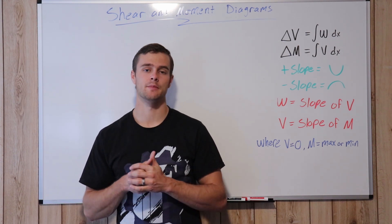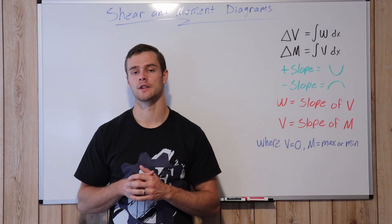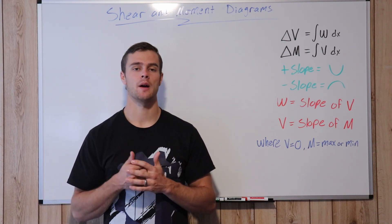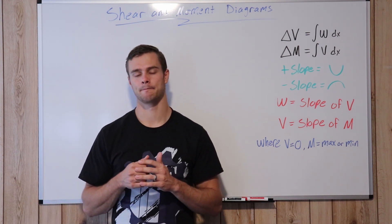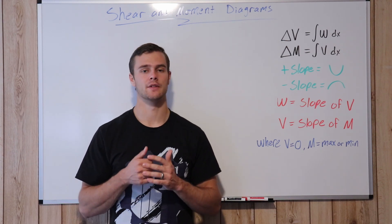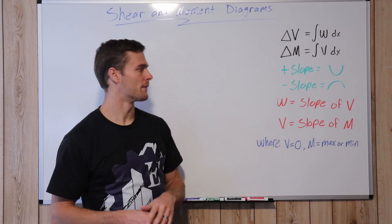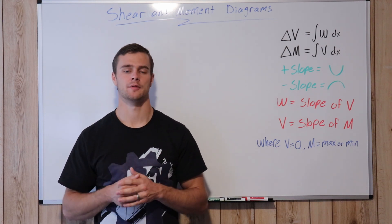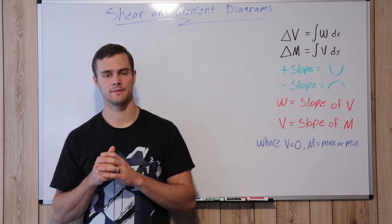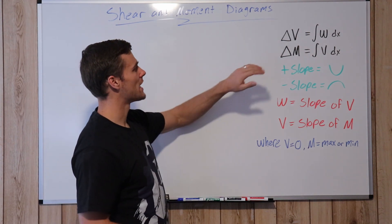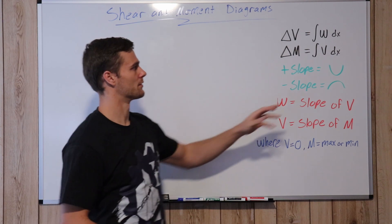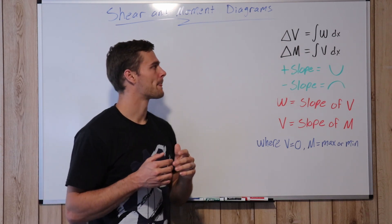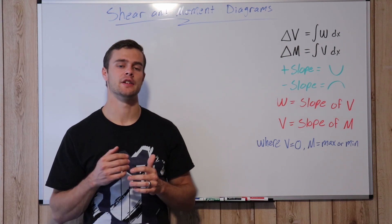Basically what it comes down to is calculus, because the integral of the loading function is the shear function, and the integral of the shear function is the moment function. That gives us a bunch of properties that help us know how to graph the shear moment diagrams based on a given loading scenario. The change in shear is equal to the integral of the loading function — w is the loading function, v is the shear, and m is the moment function. So the area under the loading curve is the change in the shear function.